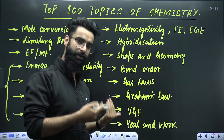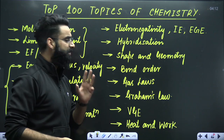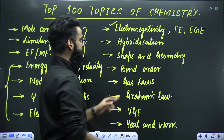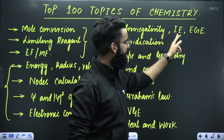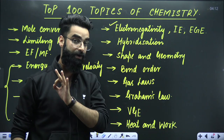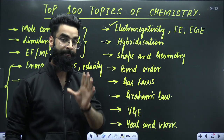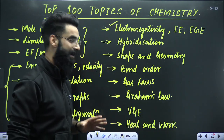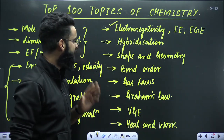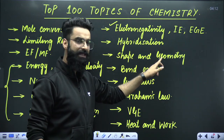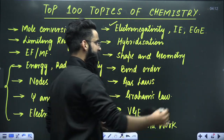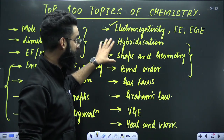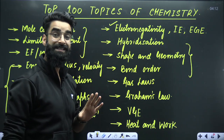From the chapter periodic classification, the three topics you must not skip are electronegativity, ionization energy, and electron gain enthalpy. Talking about chemical bonding — which is the most scoring and also the easiest chapter — the three priority topics are hybridization, shape and geometry, and bond order calculations.